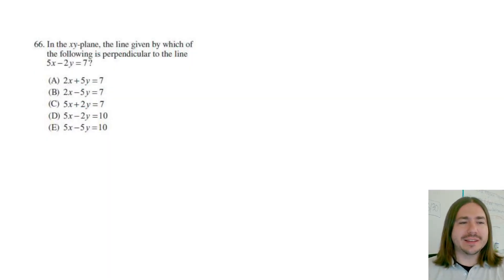Hey y'all, welcome back. Number 66 says in the xy plane the line given by which of the following is perpendicular to the line 5x minus 2y equals 7.